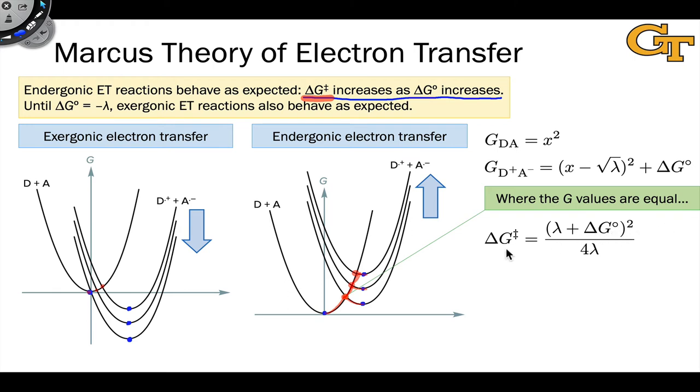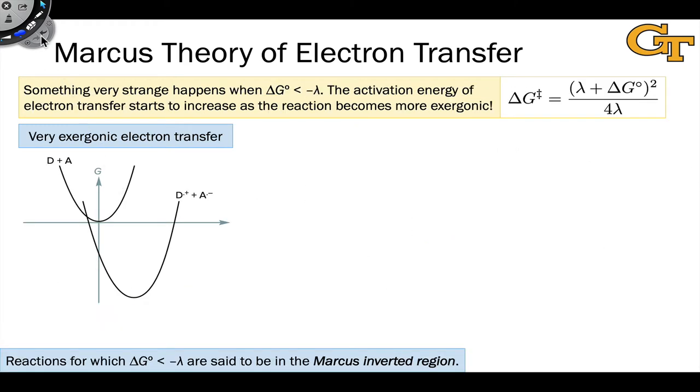Making the delta G either more negative or more positive than this value will cause the activation energy to increase. There's something strange going on here, because this implies that very exergonic reactions are going to have a higher activation energy than the reaction where delta G is equal to negative lambda. Let me show you what I mean. Here we have a case where the free energy change of the reaction is more negative than the negative of the reorganization energy. How does the representative point get from the equilibrium position of the reactant surface to the equilibrium position of the product surface? It starts here and has to actually move to the left.